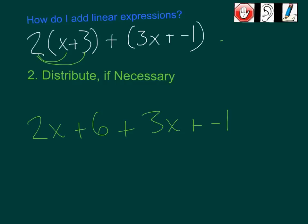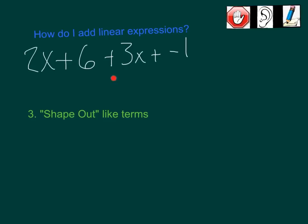Step number 3: we're just going to shape out our like terms. We did this in our last math class. When we shape out like terms, we're just going to literally draw shapes under terms that have the exact same labels. I'm going to draw triangles under everything that has a label of x. I have 2x and 3x - those are the same label, they're like terms. Then I have two constants: 6 and negative 1. I'm going to do some circles around my constants. I've now shaped out my like terms.